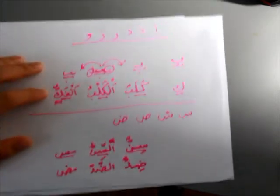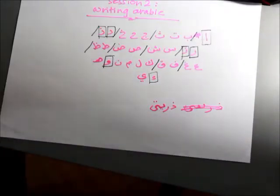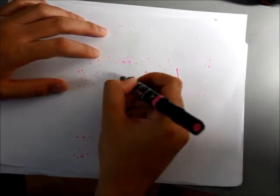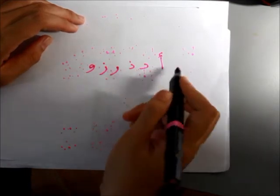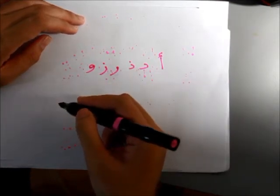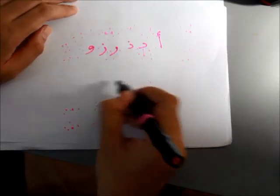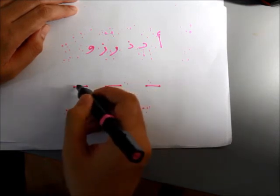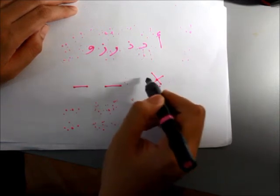Now let's take a look at the special six: Alif, Dal, Dhal, Ra, Zha, and Waw. The main idea is very simple. These six letters — Alif, Dal, Dhal, Ra, Zai, Waw, and Hamzah — do not attach to letters that come after them. They can only be attached to from the letter before them, i.e., a preceding letter can attach to them. When they occur at the front or in the middle, they do not join or attach to whatever comes after.